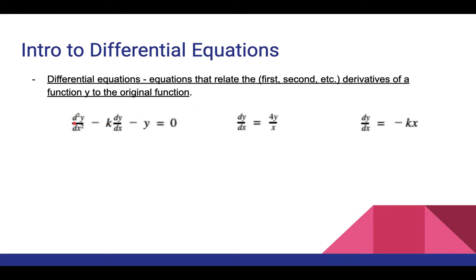An example would be the second derivative of y with respect to x minus k times the derivative of y with respect to x minus y equals 0. It relates the second-order derivative to the derivative and to y. We also have dy/dx equals 4y over x, and dy/dx equals negative k times x. Differential equations form the basis for most of modern and applied mathematics, appearing in physics, engineering, computer science, and economics.